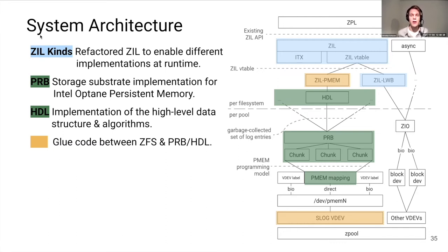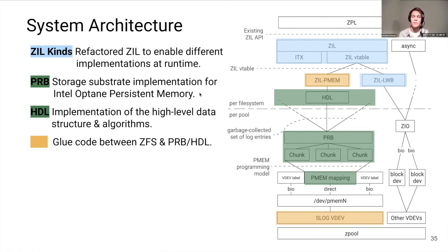In the overall system architecture of ZFS, PMEM is added as a slog VDEV to the Zpool, and we implement our new ZIL stack on top of it. We can't throw away the old ZIL code for a bunch of reasons, so the first step was to refactor the ZIL so that different persistence mechanisms could coexist at runtime. The result is something called ZIL kinds. After that, I implemented the high-level ideas — the storage substrate for PMEM is called PRB, and the high-level algorithms are in a code module called HANDLE, which exists once per ZIL instance.